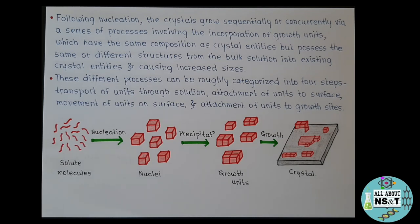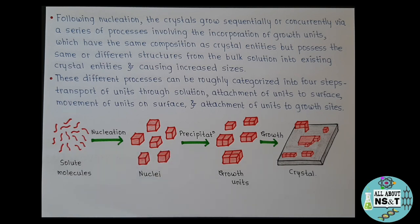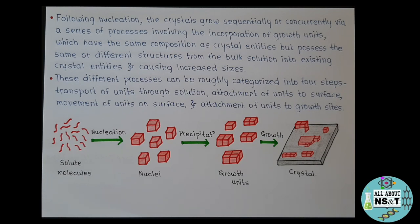The whole mechanism of this hydrothermal method can be explained with the help of a diagram. First we have solute molecules. When the solution becomes supersaturated, that is, the solutes no longer dissolve, nucleation takes place. Nucleation is the formation of nuclei via self-assembly or self-organization. After nucleation, these nuclei precipitate in the solution and growth units become involved. These growth units have the same composition as crystal entities but may differ in structure. They get incorporated into existing crystals, increasing the crystal size, ultimately yielding the prepared nanomaterials.